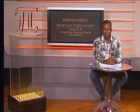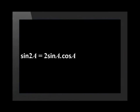Let's have a look at the formulas. The double angle identity for sine is: sine 2a equals 2 multiplied by sine a multiplied by cos a. When working with the double angle identities for cos 2 theta, there are three options to choose from.